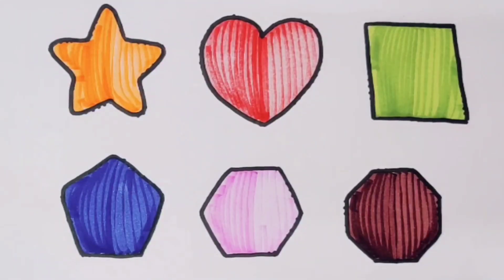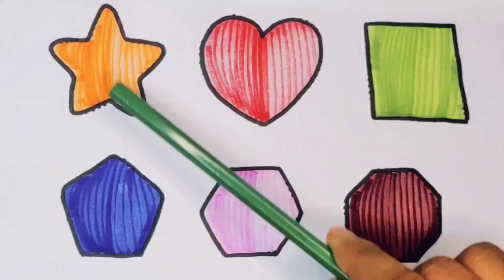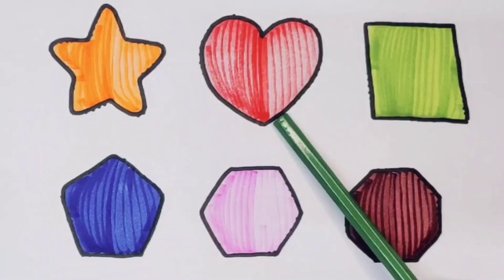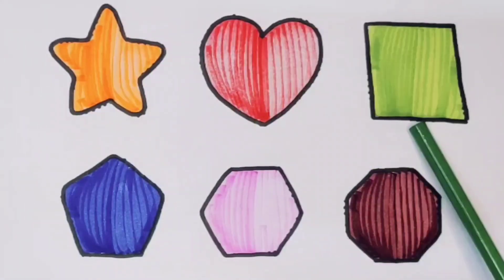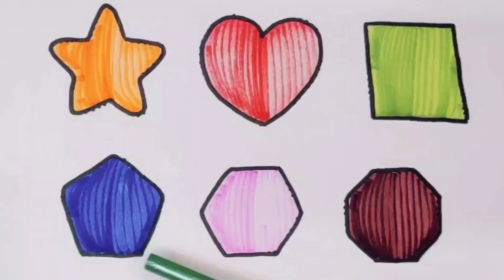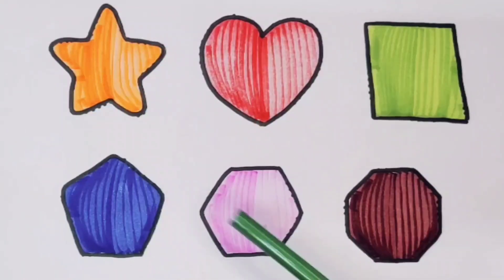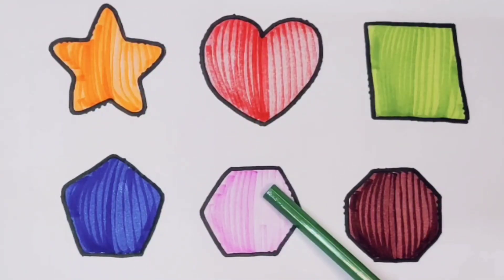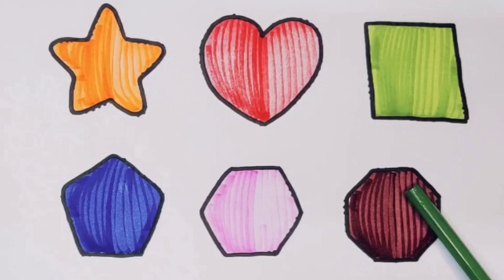What we learn? We learn orange color star, red color heart, green color parallelogram, blue color triangle, pink color hexagon, chocolate color decagon.